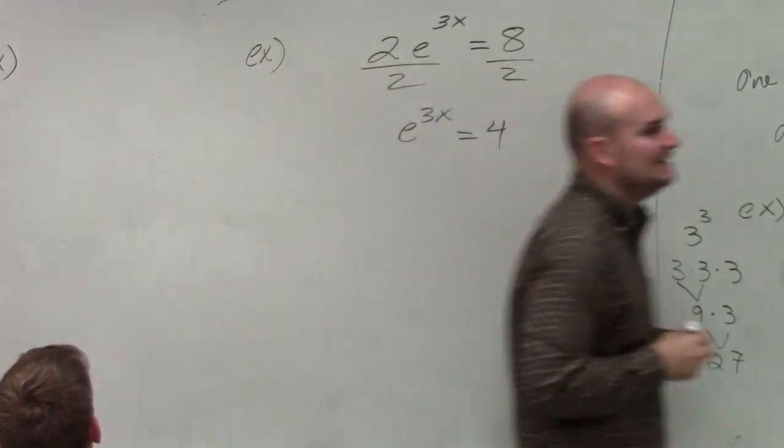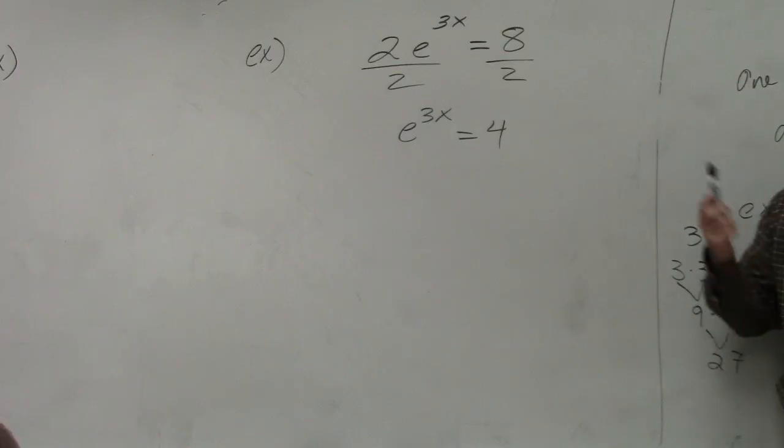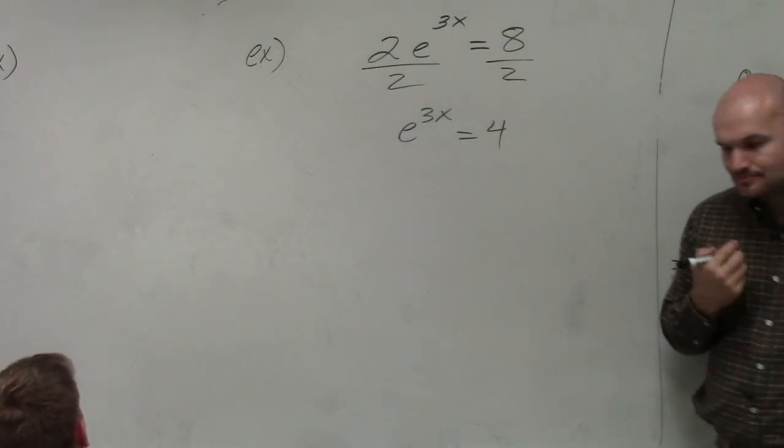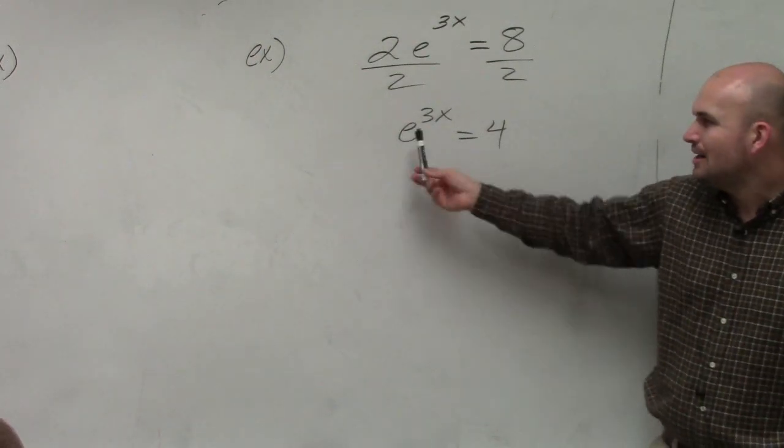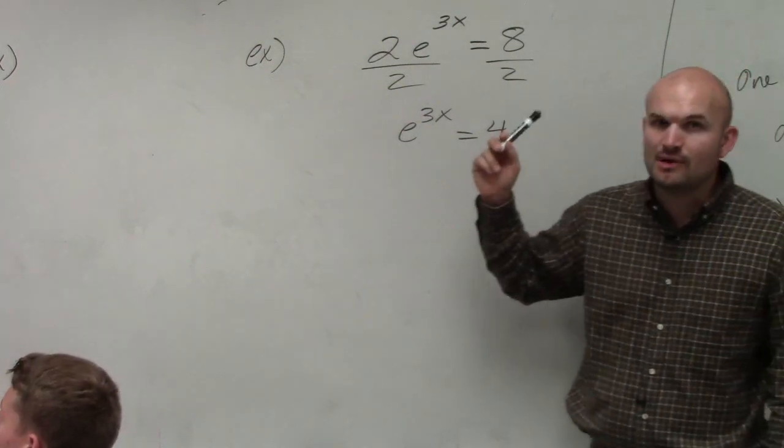So now I have e raised to the 3x equals 4. Now, the main important thing is, again, I need to get rid of e. I don't know how to get e and 4 to the same base to use the one-to-one property.